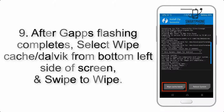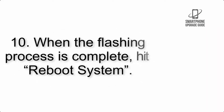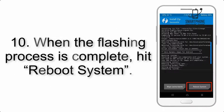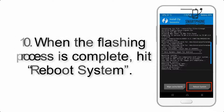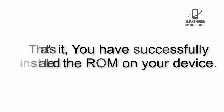Step 9: After GApps flashing completes, select Wipe Cache and Dalvik from the bottom left side of the screen and swipe to wipe. Step 10: When the flashing process is complete, hit Reboot System. That's it — you have successfully installed the ROM on your device.